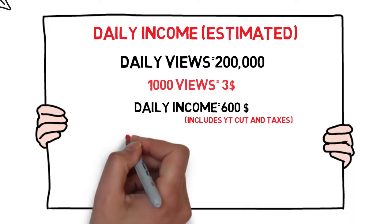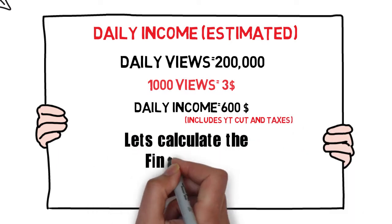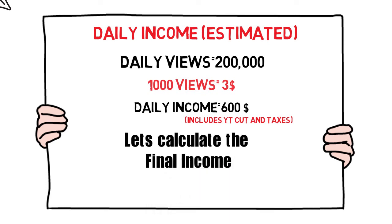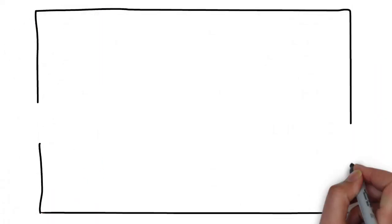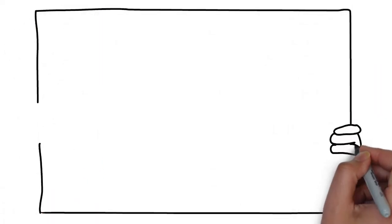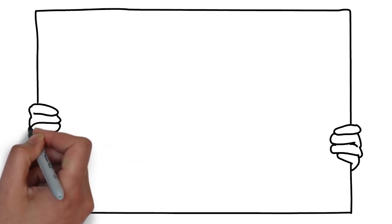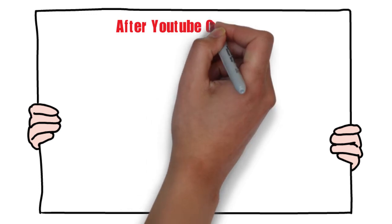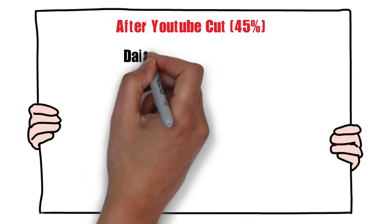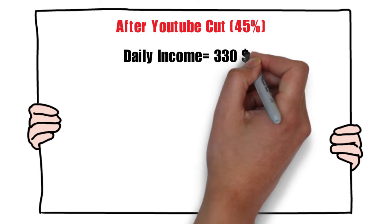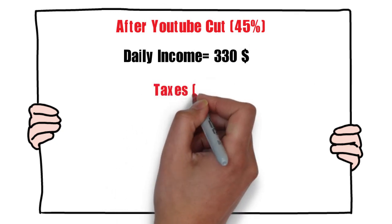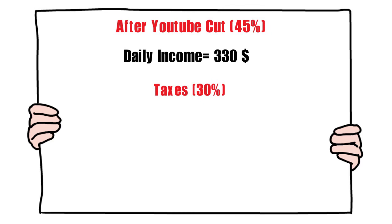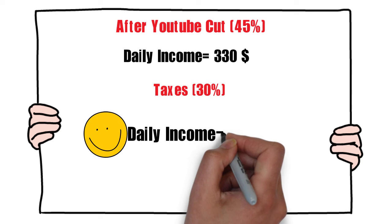So let's calculate his final income. If you haven't watched How Much Does T-Series Earn from YouTube, click on the link flashing above. Let's come back to Logan Paul. Finally, after paying YouTube its 45%, he is left with only $330. Now after paying taxes of around 30%, his daily income comes to be around $250.